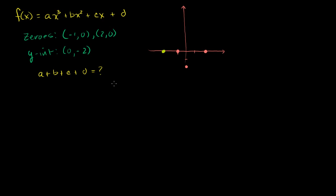Let's say that third root is sitting out here someplace. A potential graph — and I could be completely wrong, I'm just guessing — just to get a sense of what third degree polynomials look like and how a graph can intersect the x-axis three times. There are many ways you could draw something that curves twice to intersect these three points and also that y-intercept. But let's see if we can figure out the coefficients.